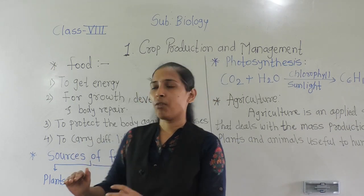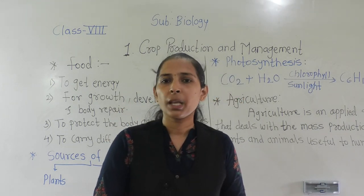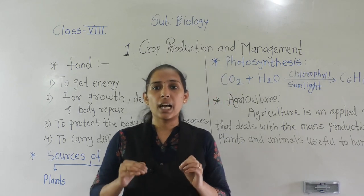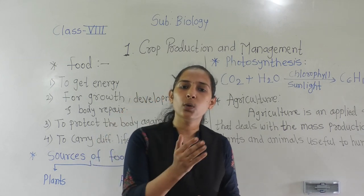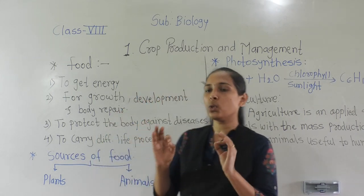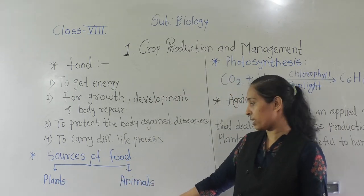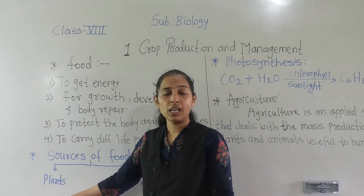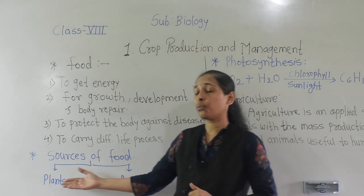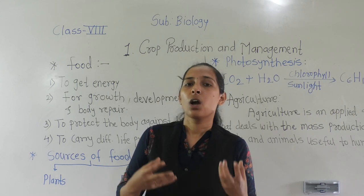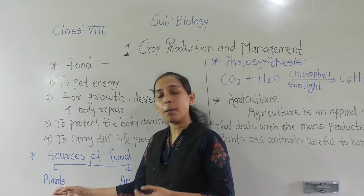So we have discussed why we need food. But do you know from where we are getting this food? There are two main sources of food — two ways from which we get food. The two sources of food are plants and animals. Either the food we get from plants — like different vegetables and fruits — all these are food materials we get from plants.